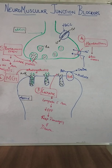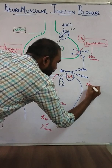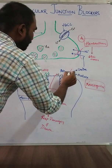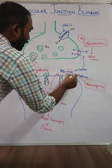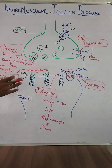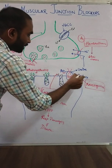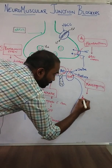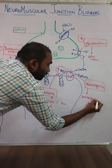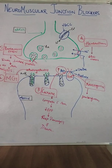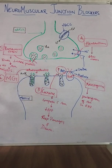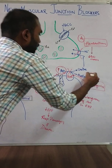The fifth agent is neostigmine. Neostigmine acts on the acetylcholinesterase enzyme, blocking the conversion of acetylcholine to acetate. This leads to an increase in acetylcholine levels, which causes prolongation of acetylcholine action and a prolonged end plate potential.